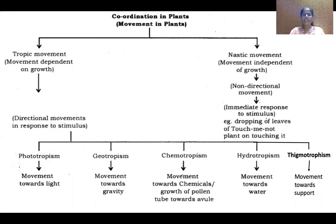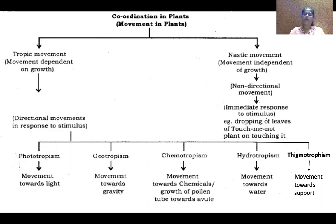Growth is related only to the influence of the environment — how we coordinate our body to the conditions. We saw in the nervous system nothing was related to growth, whereas hormones, to some extent, were related to growth, like the growth hormone. In plants, everything is related to growth. Coordination in plants is different because plants cannot move like human beings.